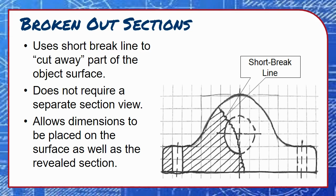Broken out sections allow dimensions to be placed on the surface of an object as well as to hidden features further back.